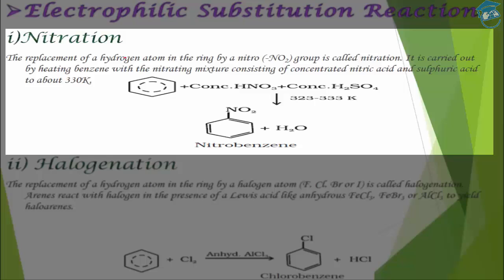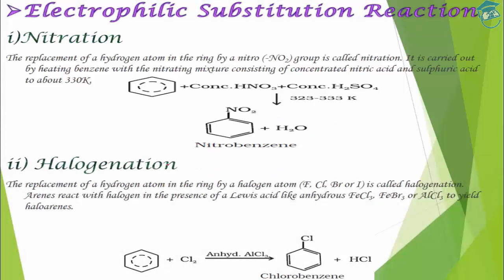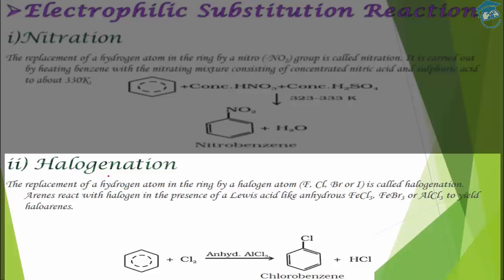The first electrophilic substitution reaction is nitration. In nitration, the hydrogen atom is removed from the ring and a nitro group (NO₂) is added. This reaction is carried out by heating benzene with a nitrating agent — concentrated HNO₃ and concentrated H₂SO₄. When benzene is heated with this nitrating mixture, NO₂ is attached and H is removed.